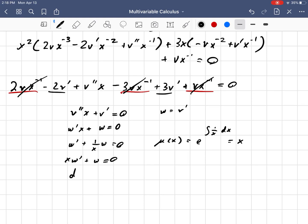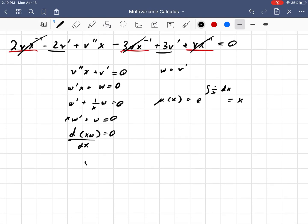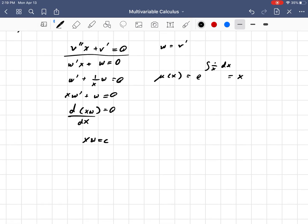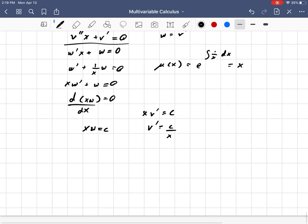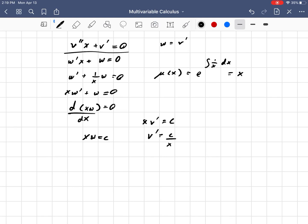So xw' + w is 0. And the left side is the derivative of xw with respect to x. So xw is equal to some constant. So we still haven't solved this original differential equation, because now xv' is a constant.